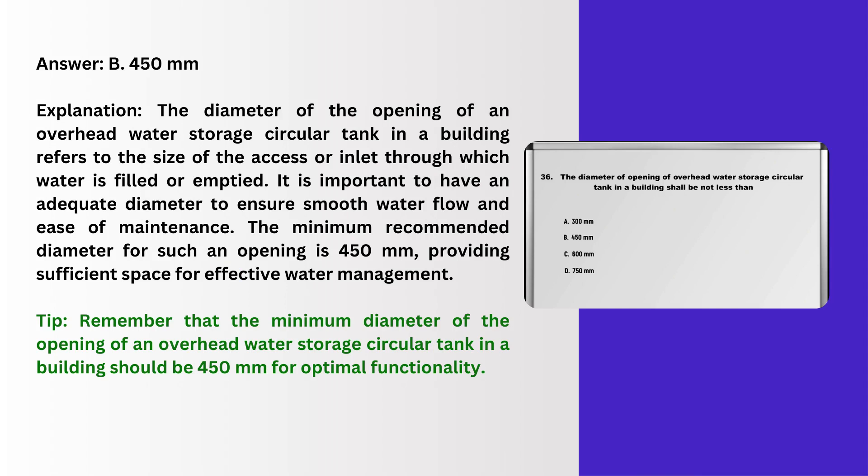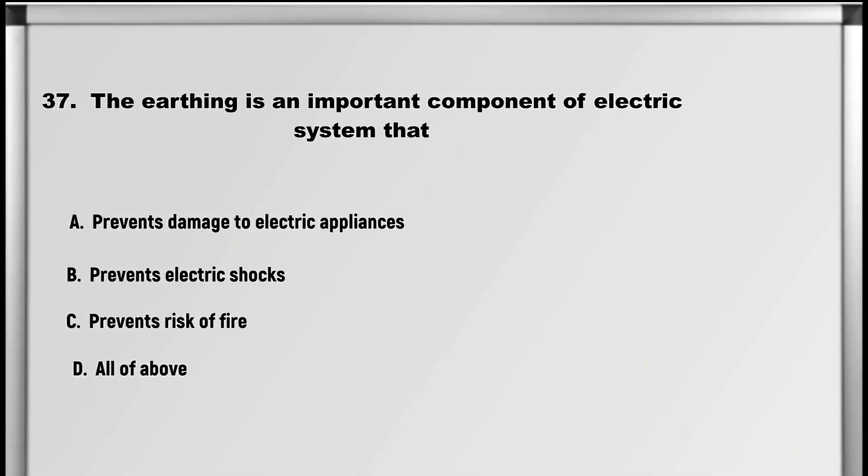Explanation: The diameter of the opening of an overhead water storage circular tank in a building refers to the size of the access or inlet through which water is filled or emptied. It is important to have an adequate diameter to ensure smooth water flow and ease of maintenance. The minimum recommended diameter for such an opening is 450 mm, providing sufficient space for effective water management. Tip: the minimum diameter of the opening of an overhead water storage circular tank in a building should be 450 mm for optimal functionality.